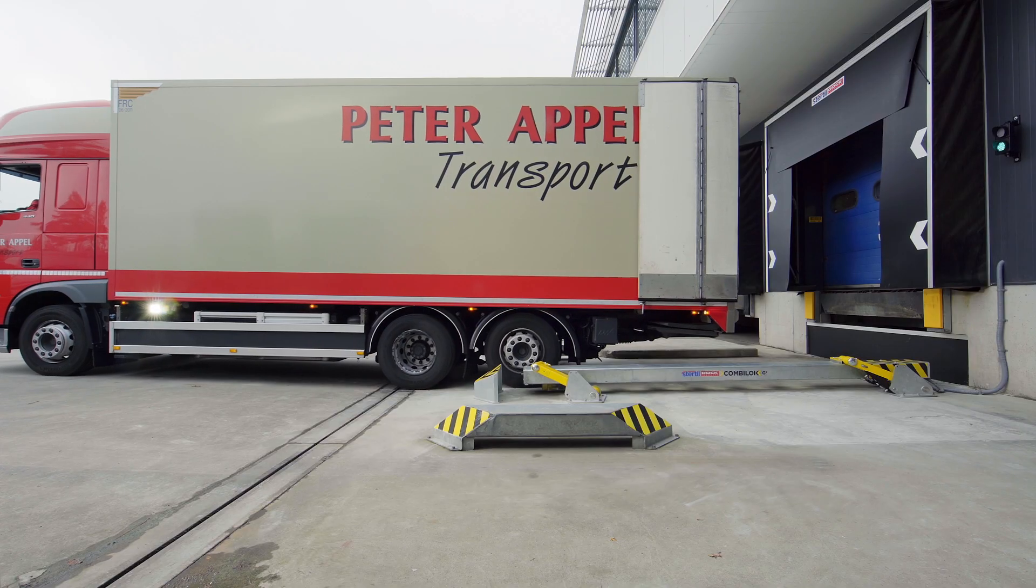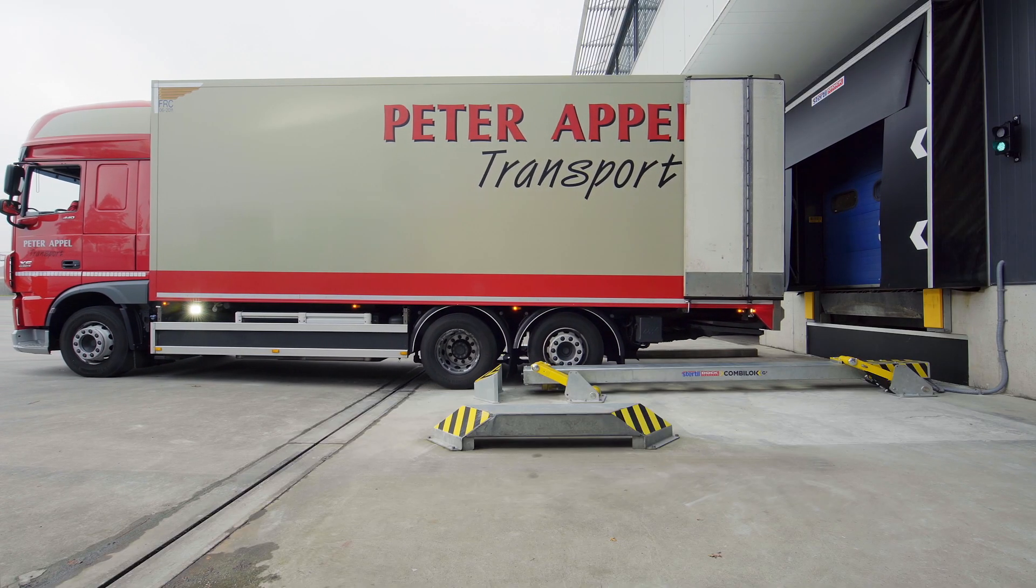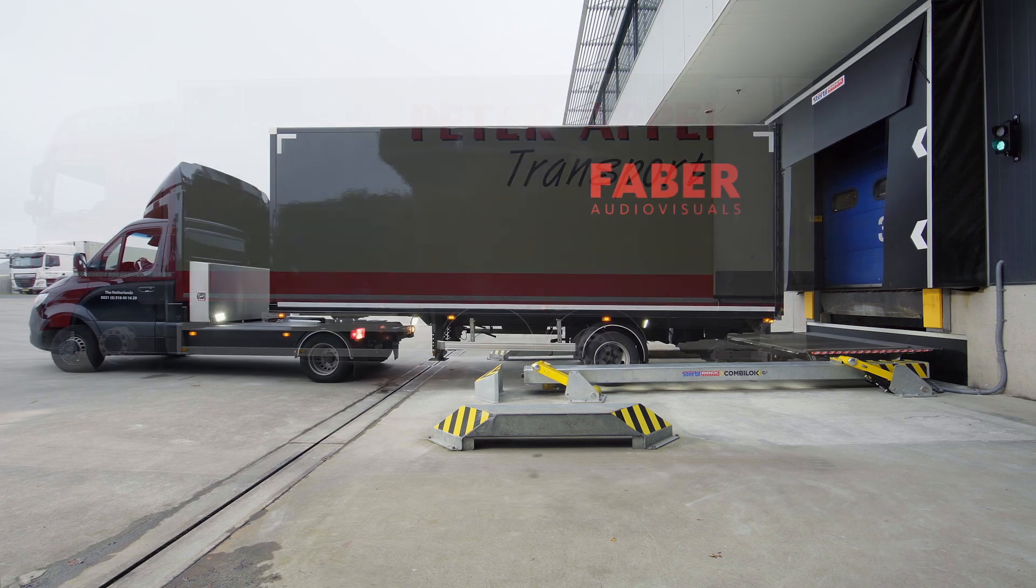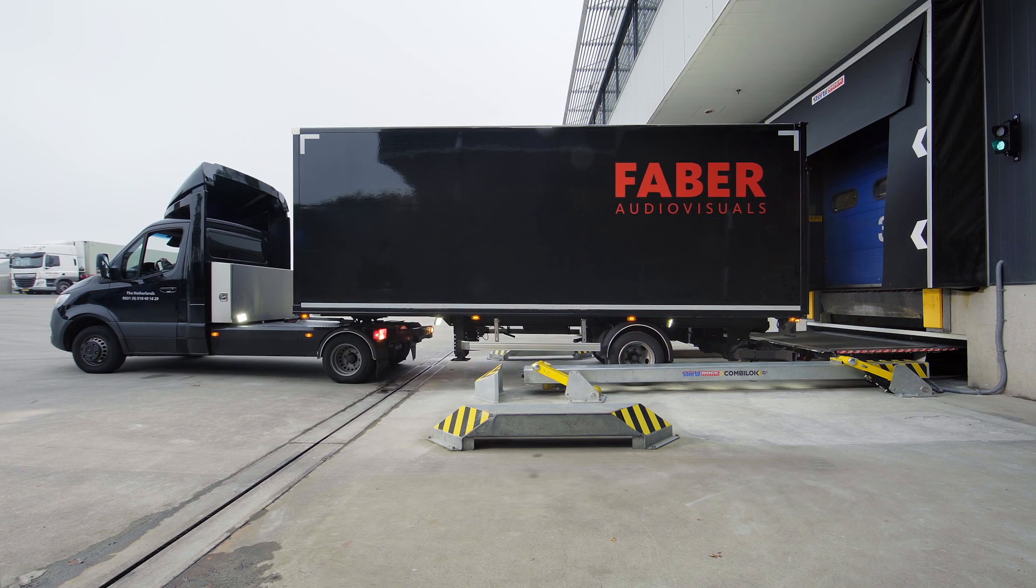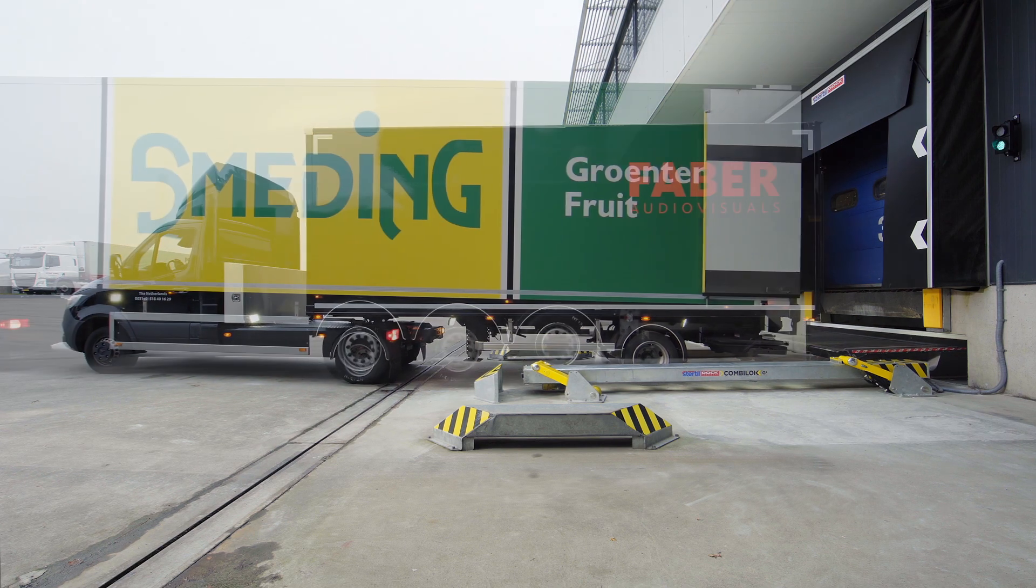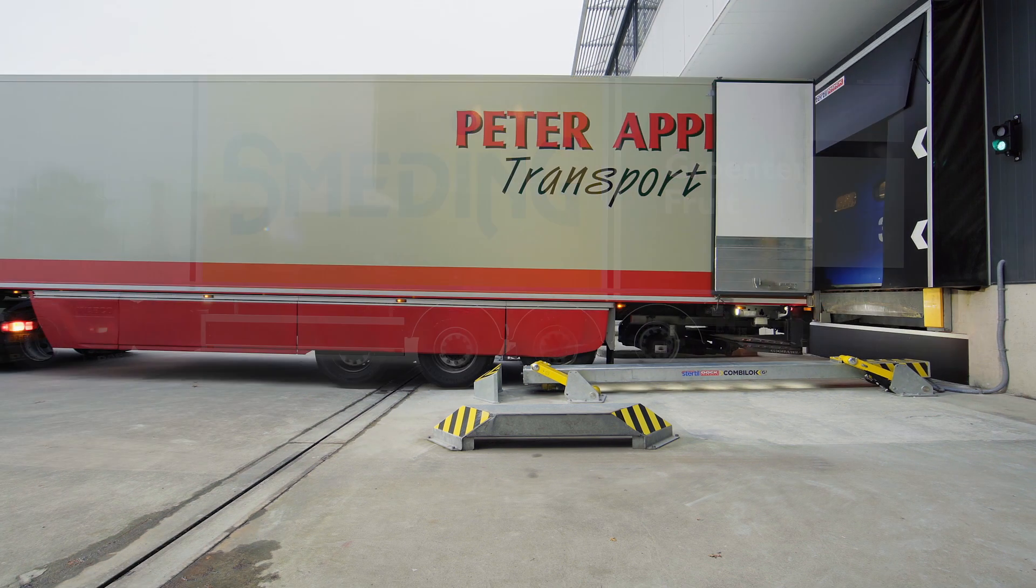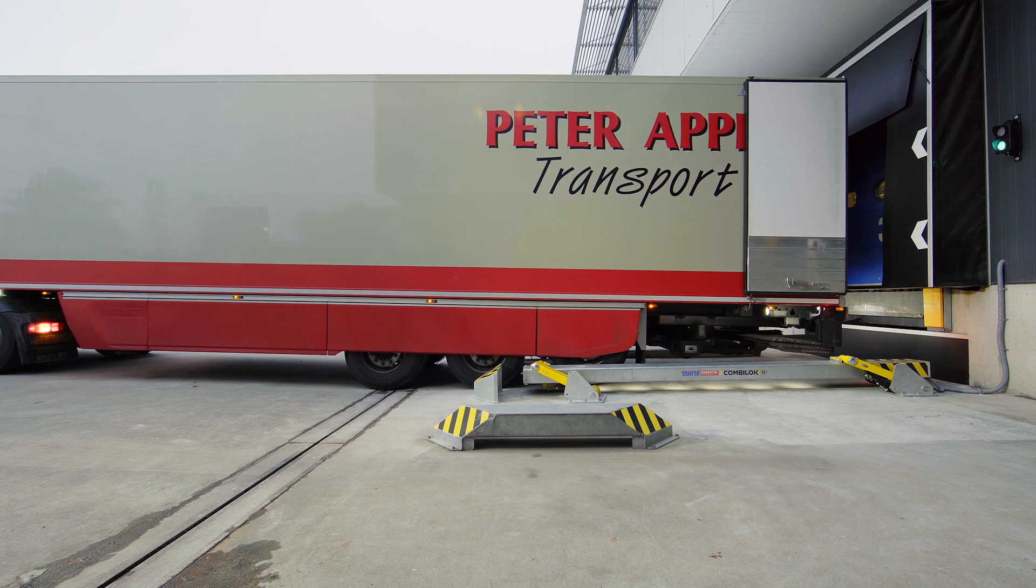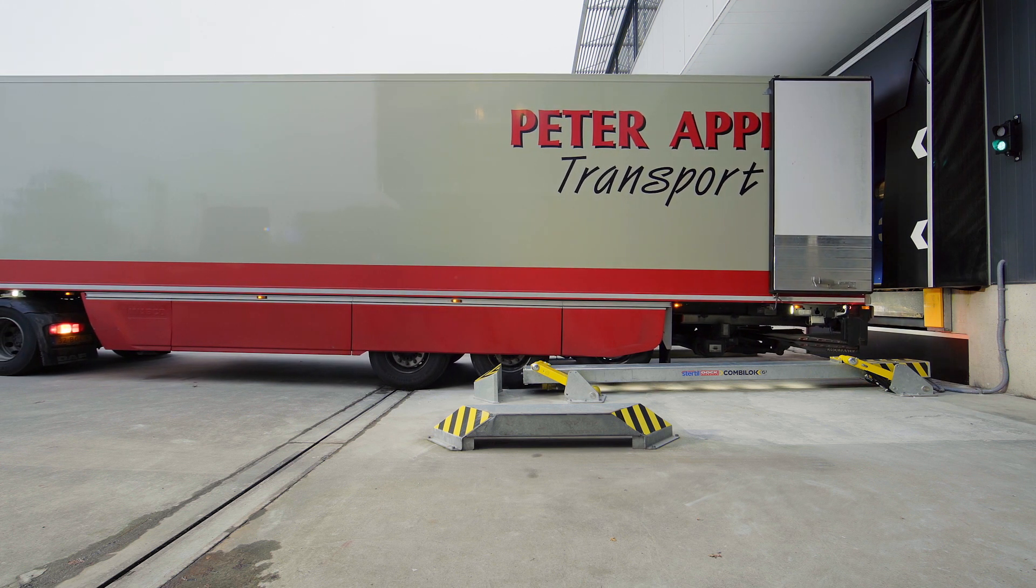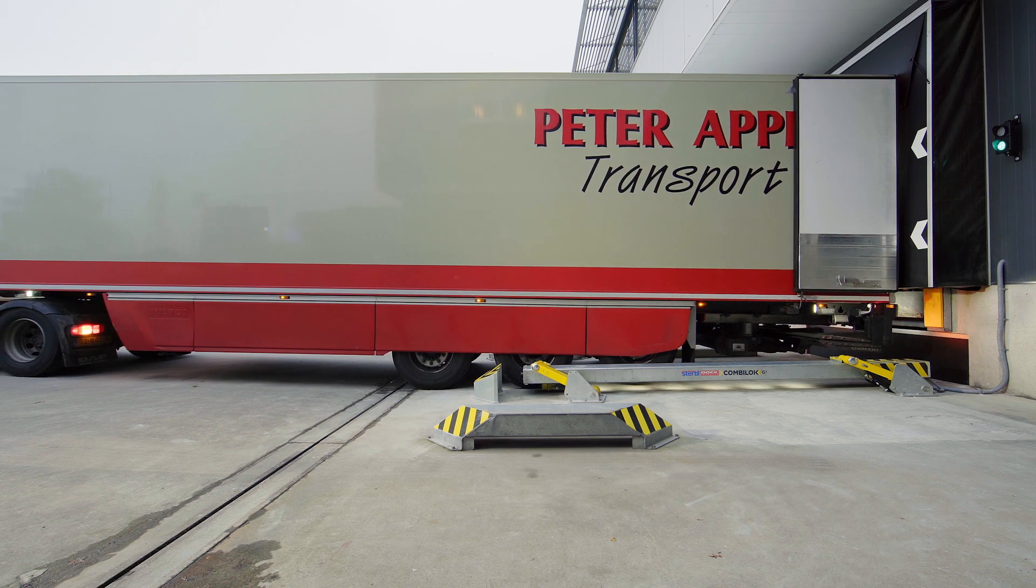What immediately catches the eye, and what makes the CombiLock G2 game-changing for the industry, is its flexible versatility. The G2 is suitable for all vehicle sizes and for a fleet with varying models of vehicles. And what's more, a dedicated loading bay for the G2 isn't required, and this is a big plus in terms of great versatility.